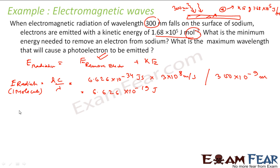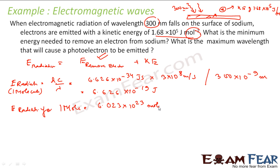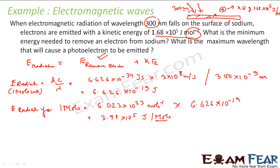But the kinetic energy is given per mole, so let's convert to per mole. For one mole, we multiply by Avogadro's number: 6.023 × 10²³ × 6.626 × 10⁻¹⁹ J = 3.99 × 10⁵ joule per mole. So the energy of this radiation is 3.99 × 10⁵ J/mol.